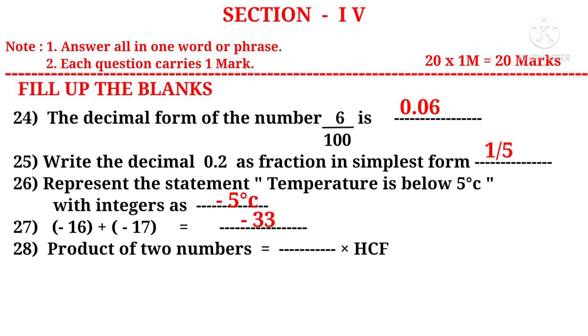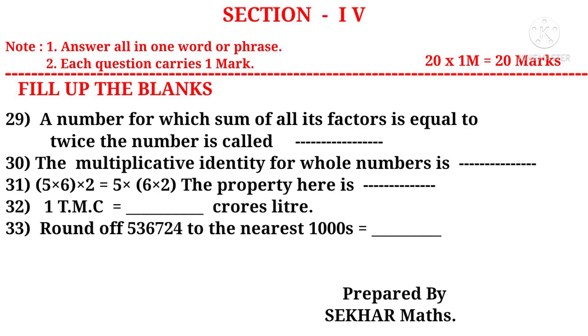Product of two numbers is equal to LCM into HCF. So LCM is the answer. Now let us answer 29th bit. A number for which sum of all its factors is equal to twice the number is called perfect number. 30: The multiplicative identity for all numbers is 1.